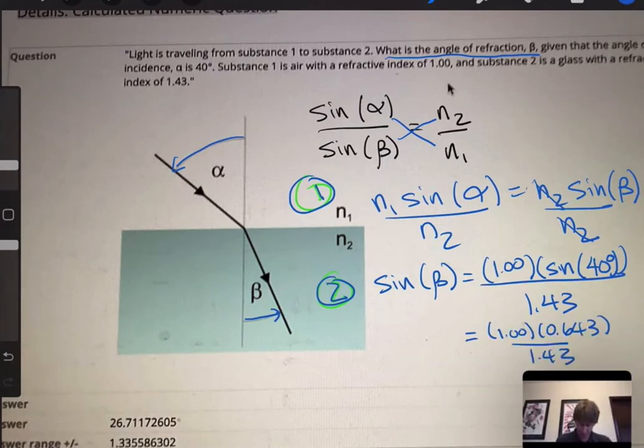Now let's solve this. It's basically 0.643 divided by 1.43, which gives me 0.4496 or 0.450.